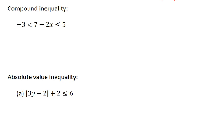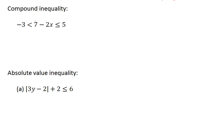For a compound inequality, we have 3 parts, but we still solve it just like an equality. Instead of doing everything to both sides of the equation, we do it to all 3 parts. So first, we want to subtract 7, giving us negative 10 less than negative 2x less than or equal to negative 2.